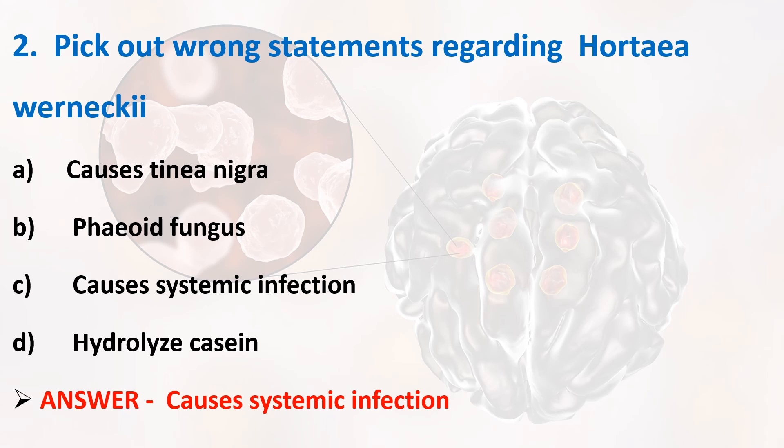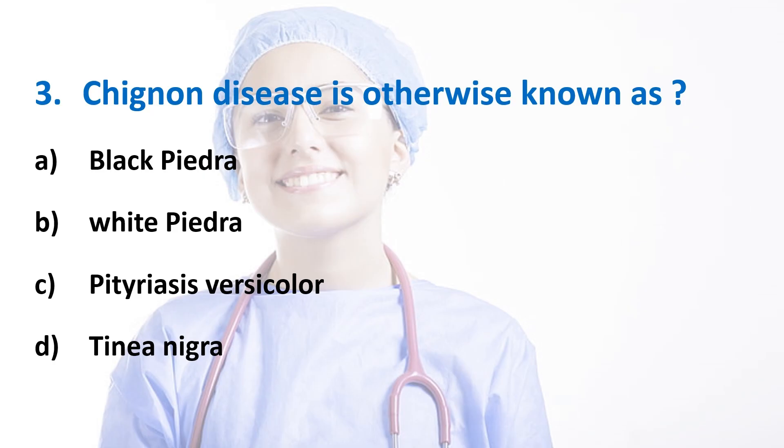Hortaea werneckii, also called Exophiala werneckii, is a black-colored fungus, so it is a phaeoid fungus. It causes Tinea nigra and it hydrolyses casein. The statement 'causes systemic infection' is the wrong statement.